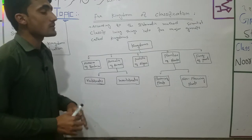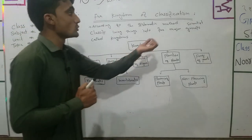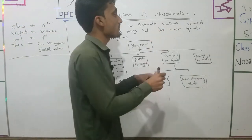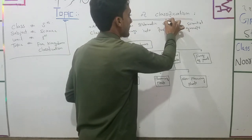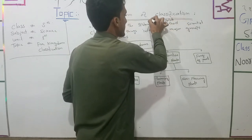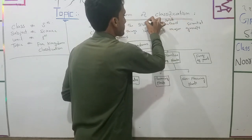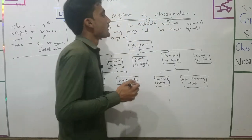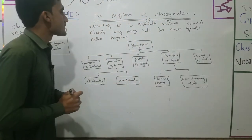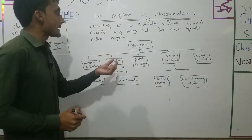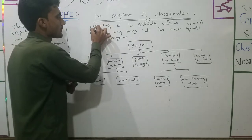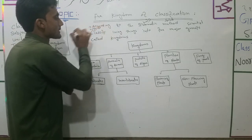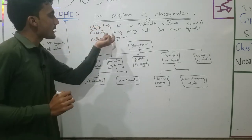Systematic means 'tarteebaad' — a systematic, ordered method. 'Method' means 'tariqa'. Scientists have classified — 'takseem kia hai' — living things into groups.